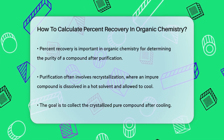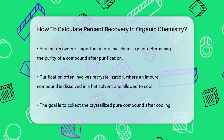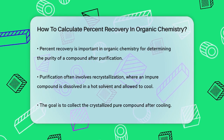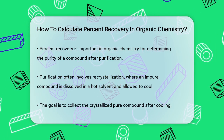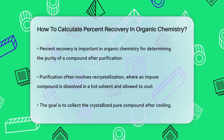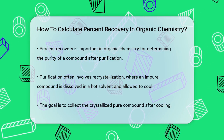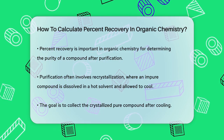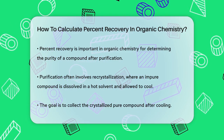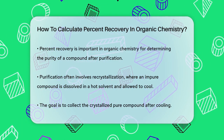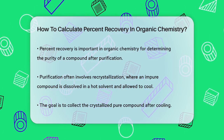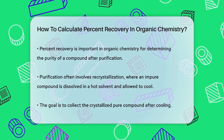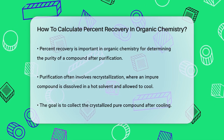Imagine you have a mixture of a compound with some impurities and you want to purify it. The process you might use is called recrystallization. Here, you dissolve the impure compound in a hot solvent, let it cool, and then collect the crystallized pure compound.